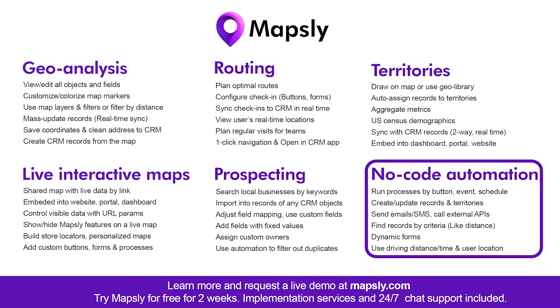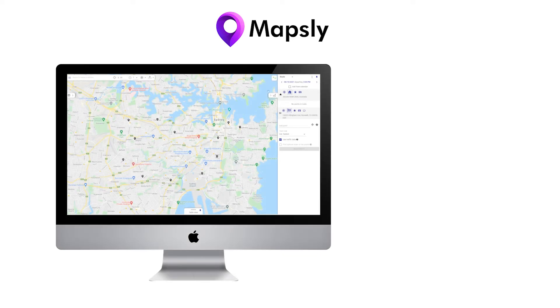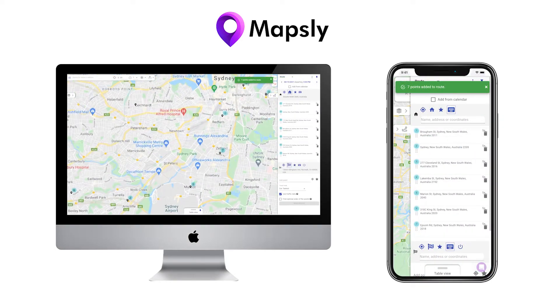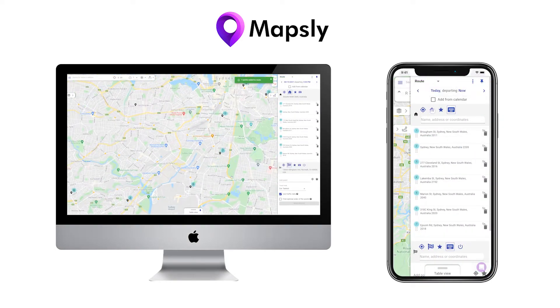These automated processes can create and update CRM records, send emails and SMS, calculate driving distance and time between locations, update territories, and search for records that match certain criteria. All Mapsly functions are available both in the web app and in the mobile app. This video provides an overview of these features — learn more at mapsly.com.